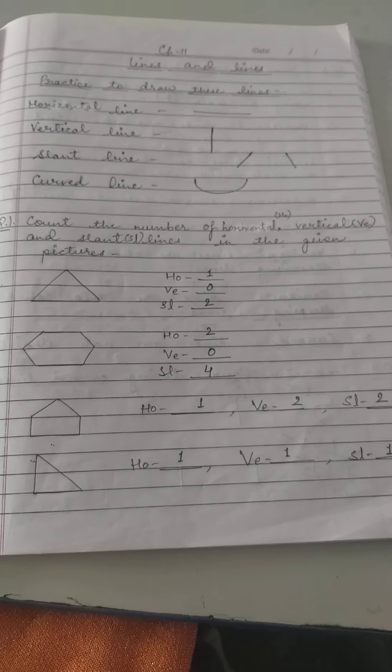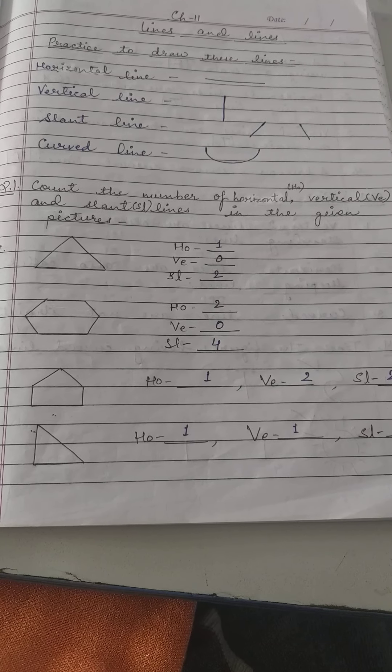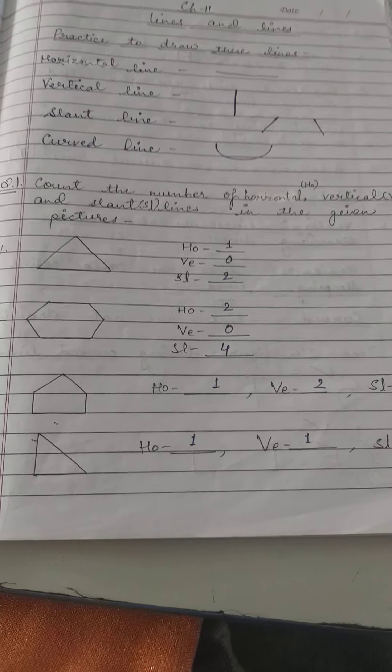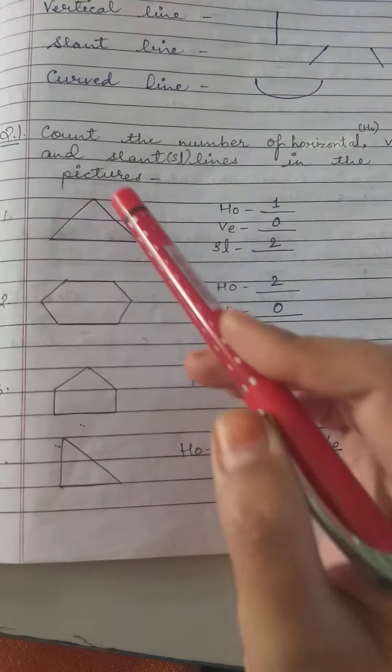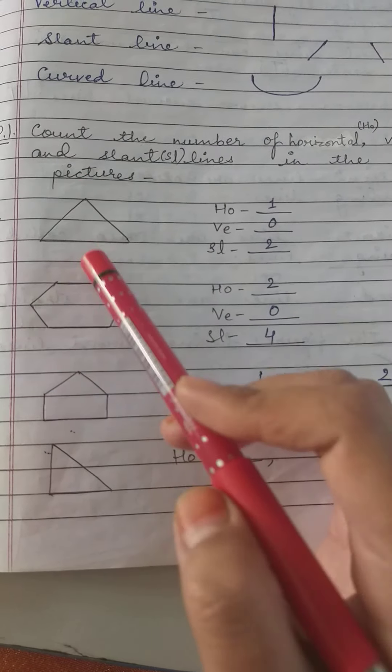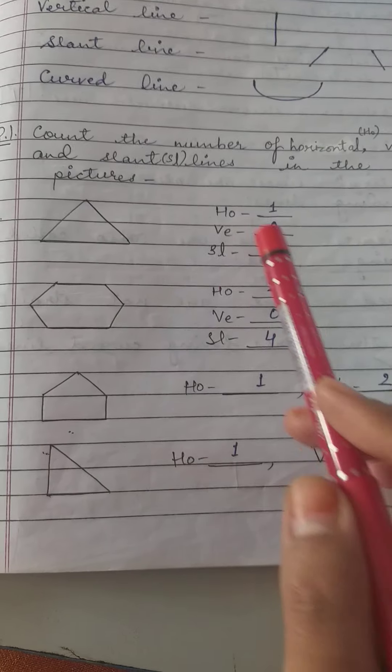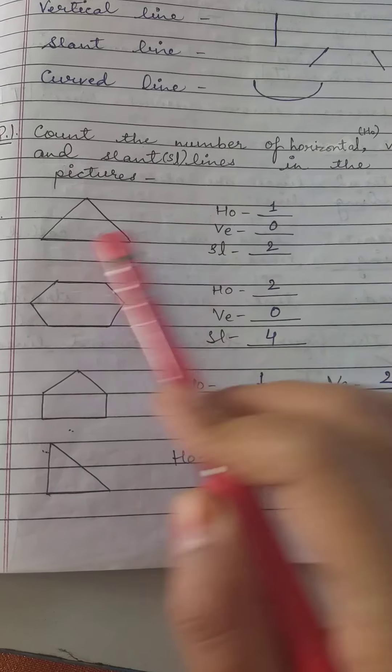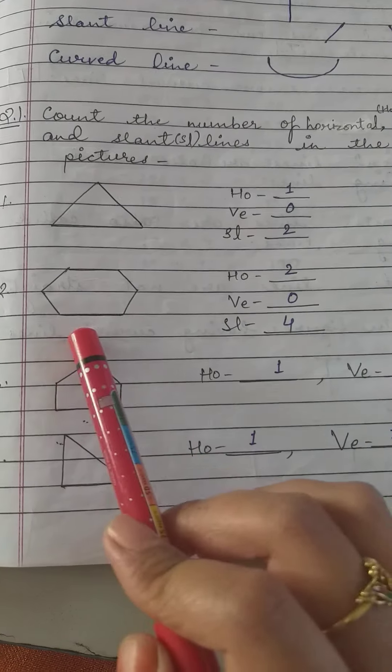Okay, now the first question is: count the number of horizontal, vertical, and slant lines in the given pictures. In the first picture, there is no vertical line, that is zero. Horizontal line, there is one, that is one. Slant lines are two.